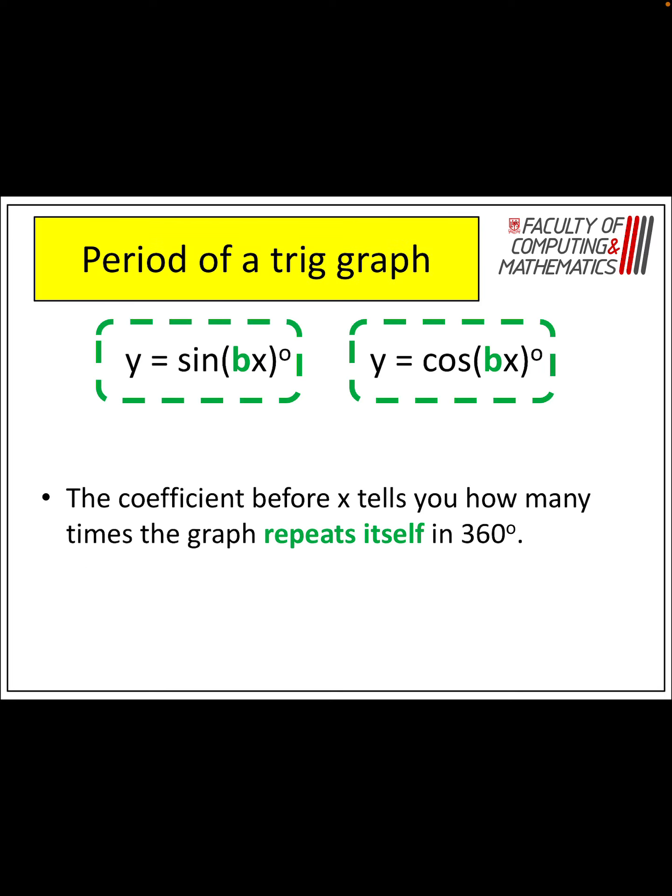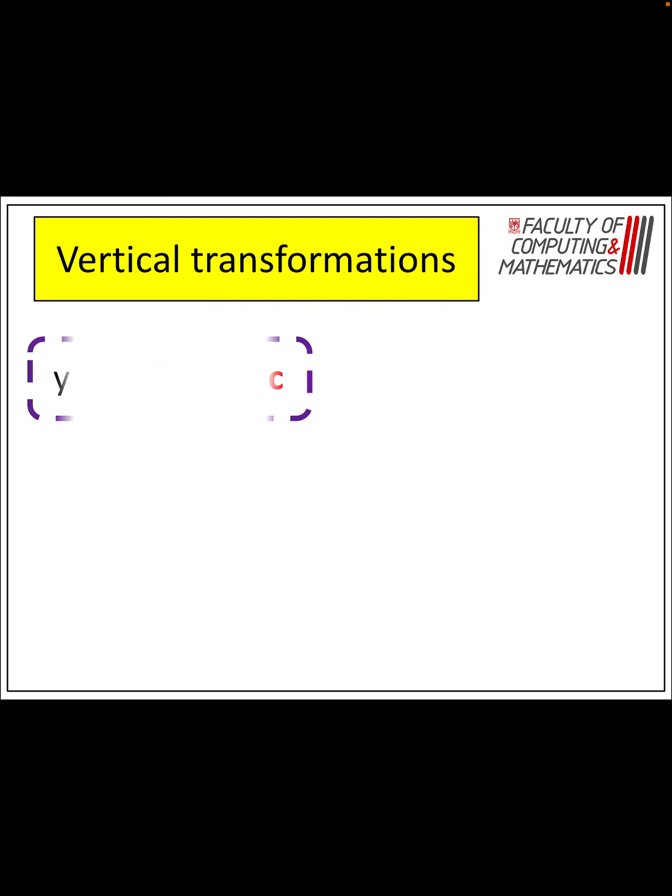So the period tells you how many times it repeats itself up to 360 degrees, and it's the B value. We take 360 divided by B to find the period of the graph.